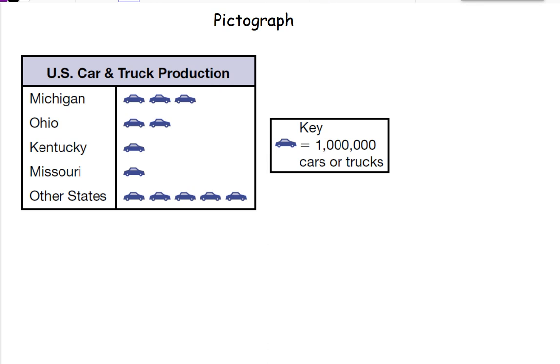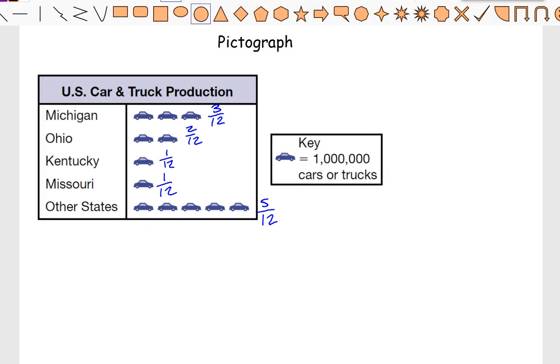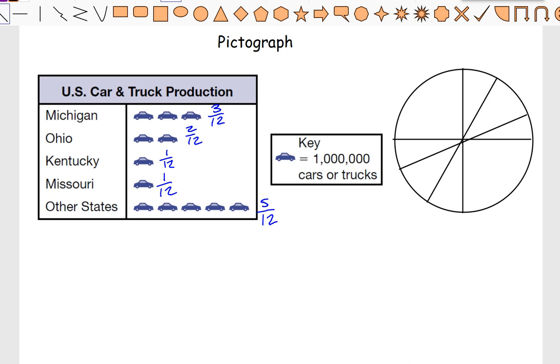So I'm going to write each of these amounts as fractions. We have three twelfths, two twelfths, one twelfth, one twelfth, and then five twelfths. Now I'm not reducing these because it's going to help me turn this information into a circle graph. So I'm going to go ahead and create a circle graph. Circle graphs can be difficult to make. I'm using my lines on this program, so it's a little bit easier. Just know as long as you get close to having each section the same size, you'll be just fine.